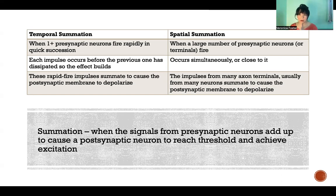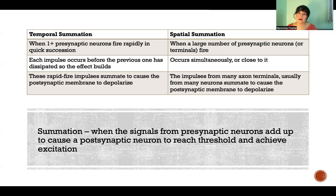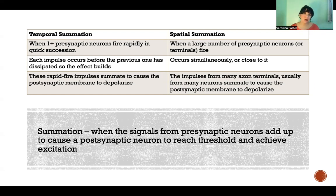Instead of having an impulse and then coming all the way back to zero, it's happening so quickly that the impulses and the neurotransmitters are essentially building and building and building until eventually the postsynaptic membrane depolarizes because the rapid-fire impulses coming from the presynaptic neurons summate.